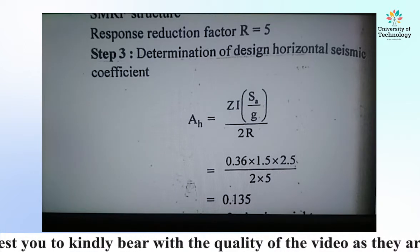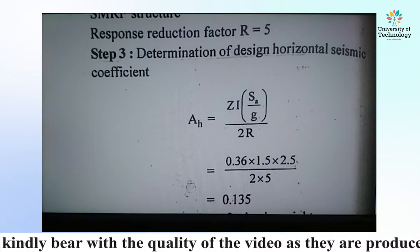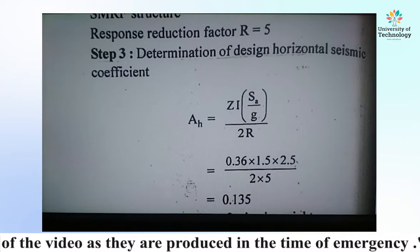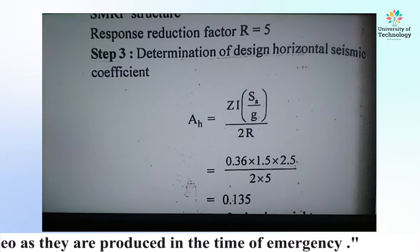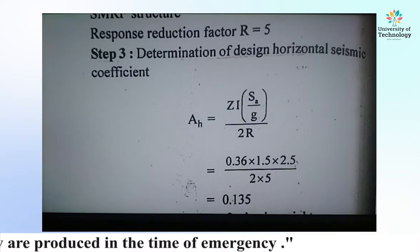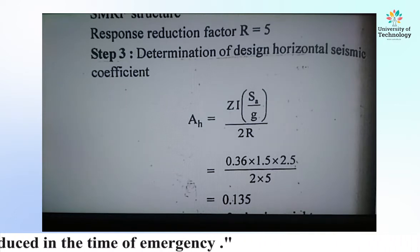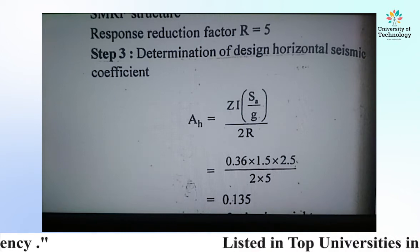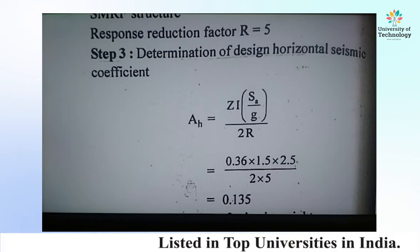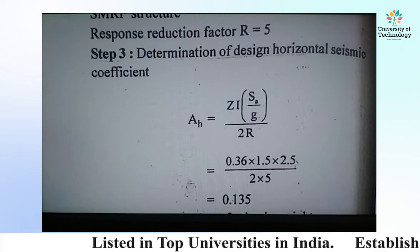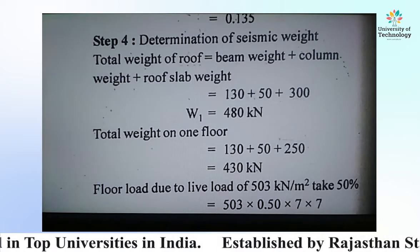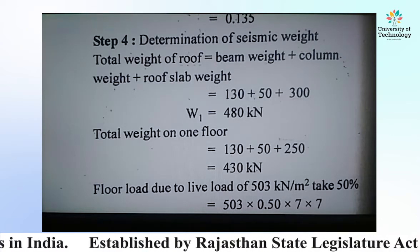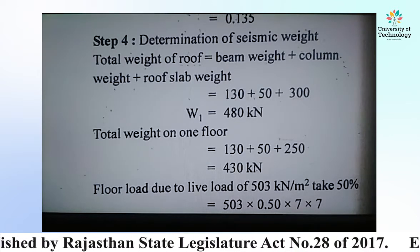Step 3: Determination of the design horizontal seismic coefficient Ah. This is given by the formula Ah = (Z/2) × (I/R) × (Sa/g). Substituting all the values we have already calculated, we get Ah = 0.135.